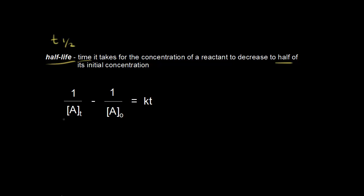Here's one form of it: one over the concentration of A minus one over the initial concentration of A is equal to the rate constant K times the time. So if we're talking about the half-life, that would be when time is equal to T½. So we're going to plug T½ in for the time.